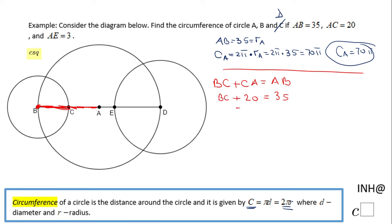Subtracting 20 from both sides we have BC equals 15. This BC is nothing else than the radius of circle B, so now we can find the circumference of circle B.